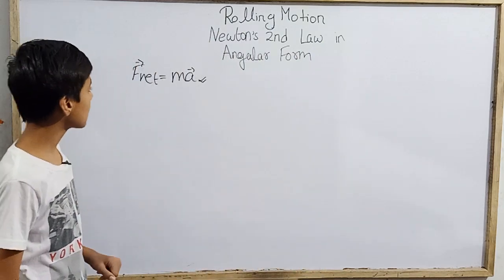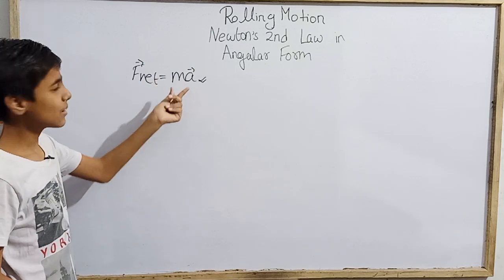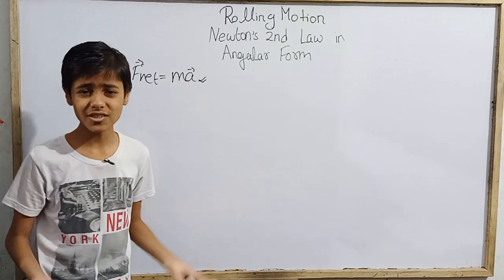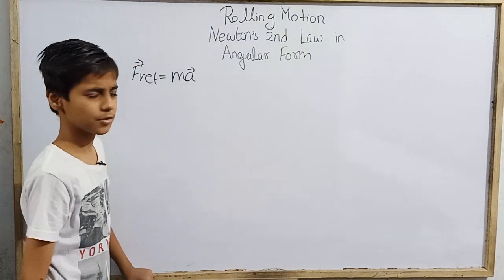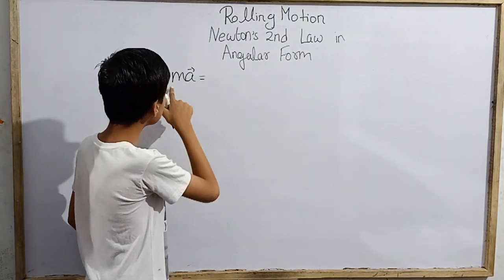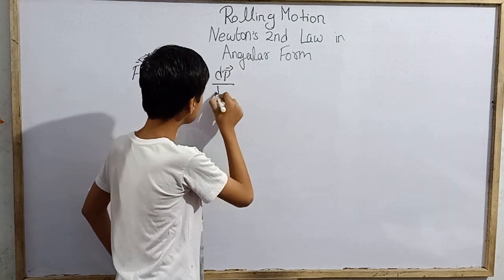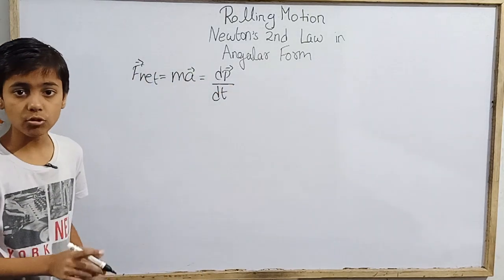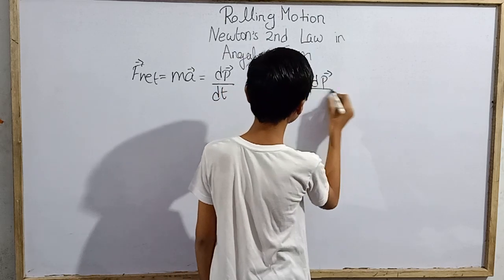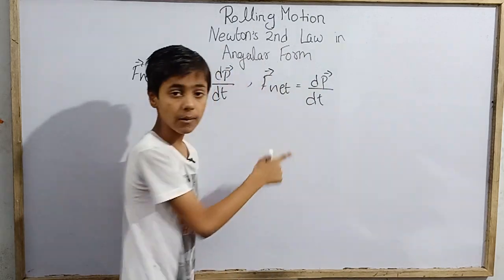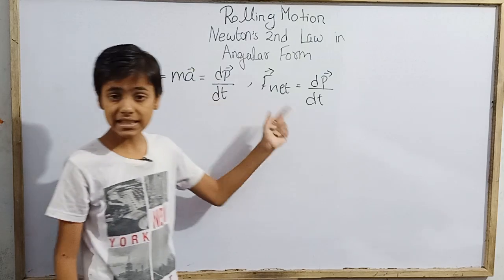We can see that there will be a torque quantity: τ_net equals moment of inertia I times angular acceleration α. We also know that F_net equals ma, and we can write this as dp/dt. So how do we apply this to rolling motion? We need to look at this carefully.